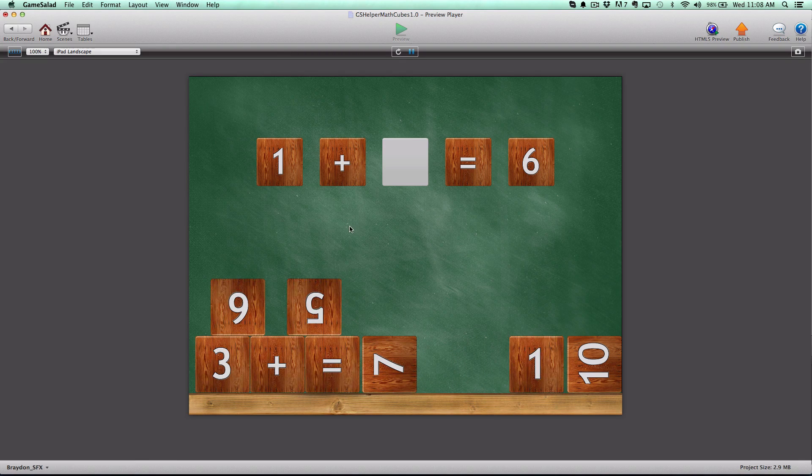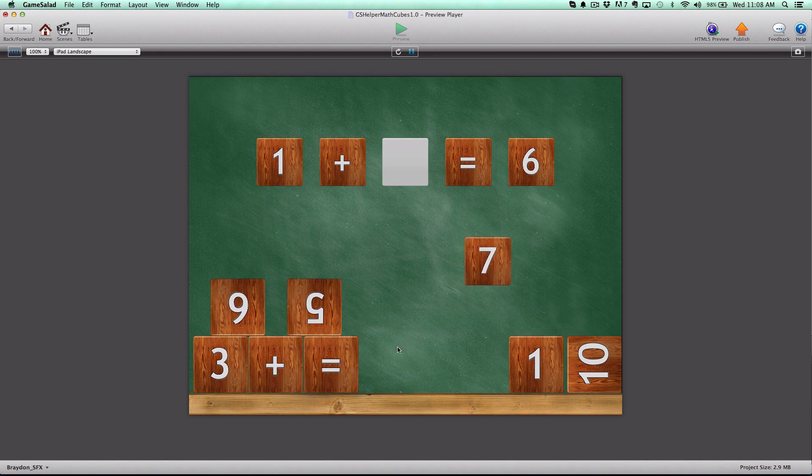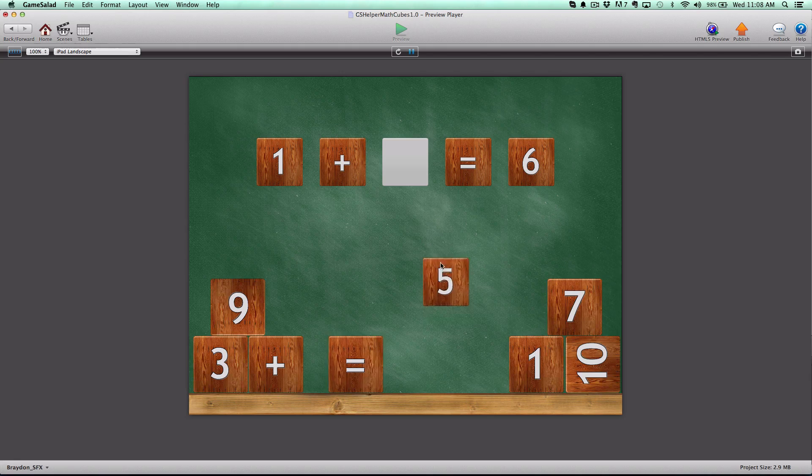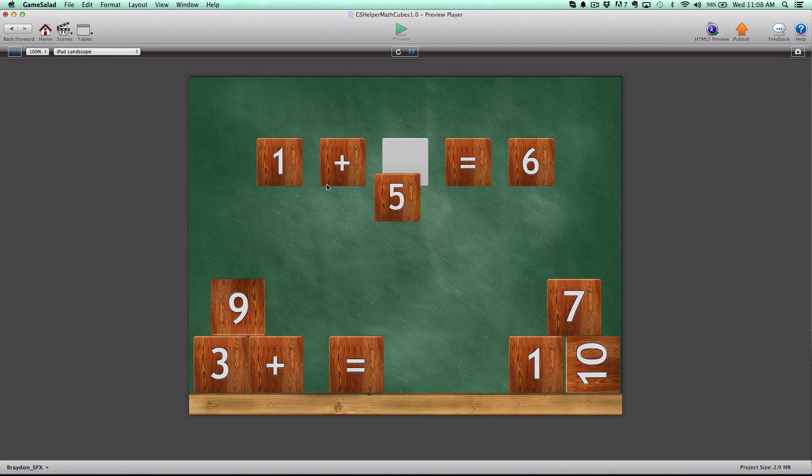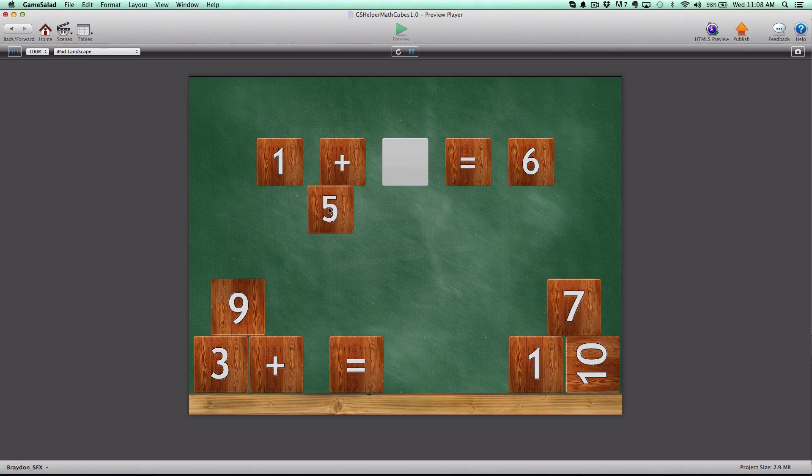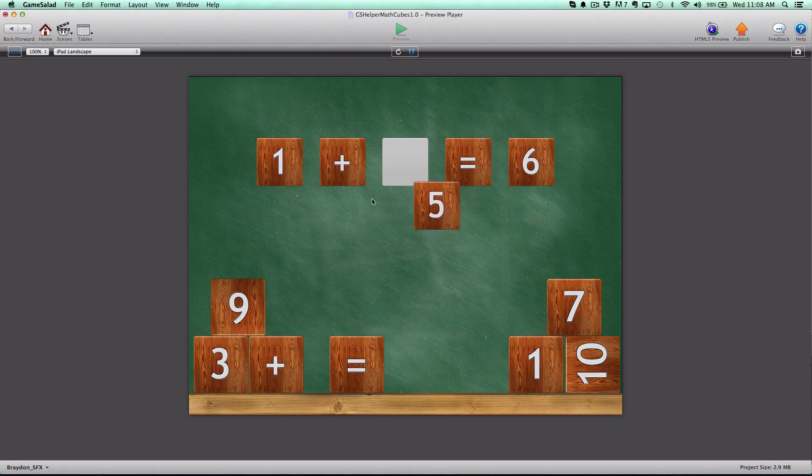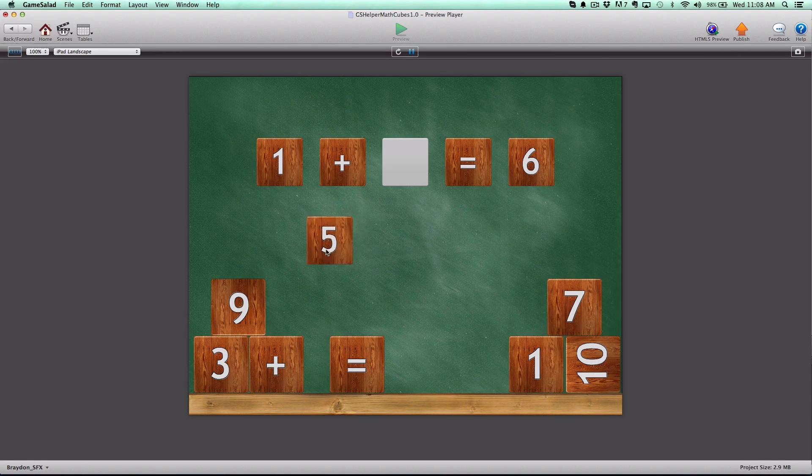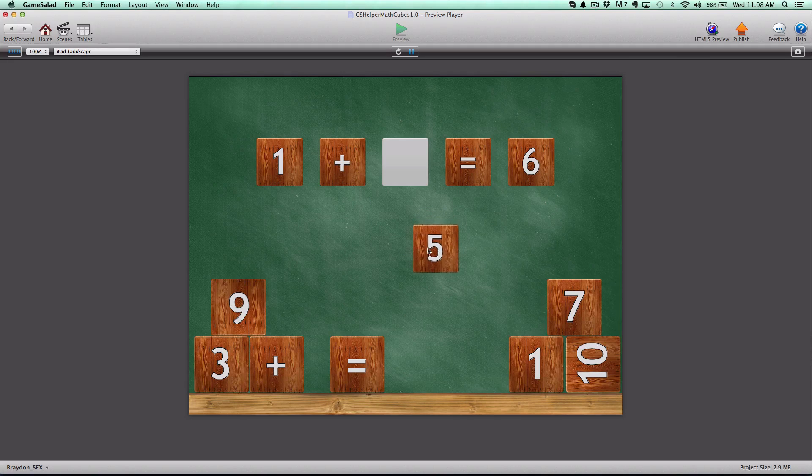You have to solve the equation. It says 1 plus blank equals 6. So what plus 1 equals 6? The answer is 5. When we drag it here, it has a really nice dragging motion. It's not directly snapped to the mouse, but you can see it moving with the mouse. The velocity is constrained to the mouse, giving it a nice effect.